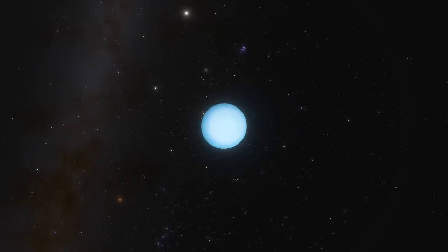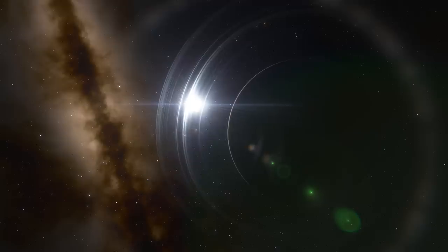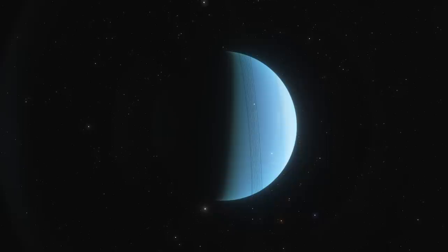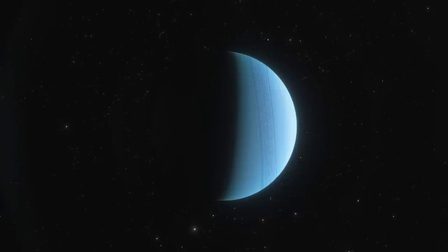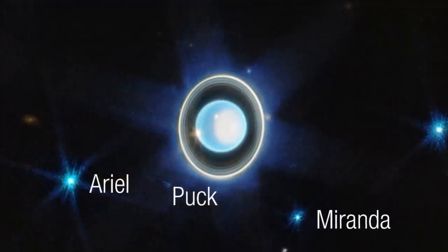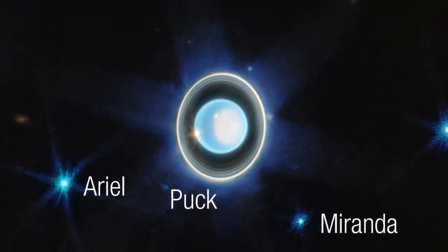For those not familiar with Uranus, the ice giant sits 2.9 billion kilometers from the sun, and is unique in that it rotates on its side at a 90-degree angle from the plane of its orbit. The Webb image demonstrates its incredible sensitivity and its ability to image even the faintest rings around planets. The original image is just as stunning, and you can see several stars in the background behind the planet.